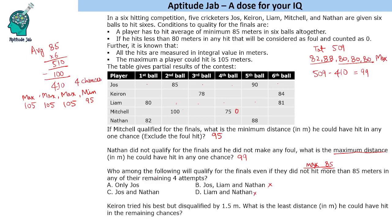For Nathan, who has hit 82 and 88: if he hits 85, 85, 85, and 85 in the remaining four chances — note that 'not more than 85' does not mean less than 85; it can be exactly 85 — his average will be exactly 85 and he can qualify. So both Joss and Nathan can qualify even without hitting more than 85 in the remaining attempts.